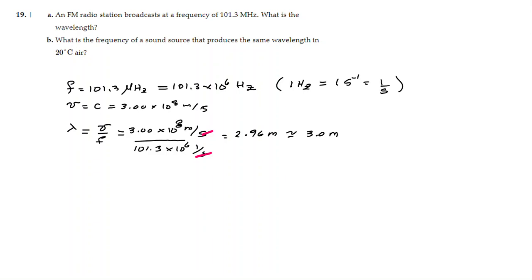Now, in the second part of the problem, they ask: what is the frequency of a sound source that produces the same wavelength in 20 degrees Celsius air? This second wave is a sound wave, so we have to understand that its speed is going to be completely different than the speed of the previous one. In this case, it will be the speed of sound in air at 20 degrees Celsius, which is approximately 343 meters per second. This wave has the same wavelength as the electromagnetic radio wave we calculated before, so the wavelength we are going to use is 3 meters.